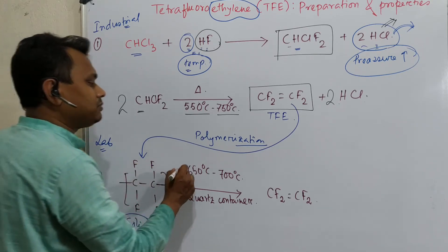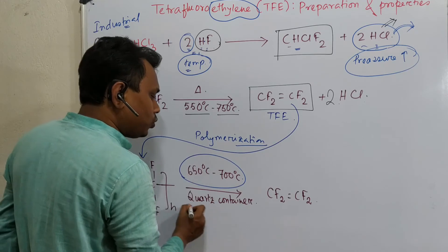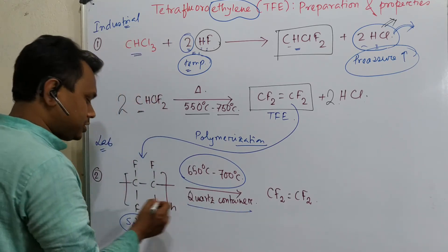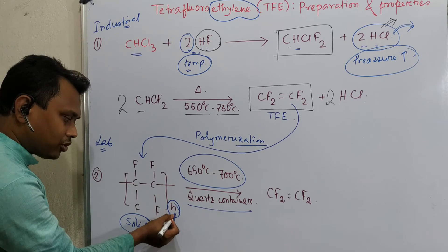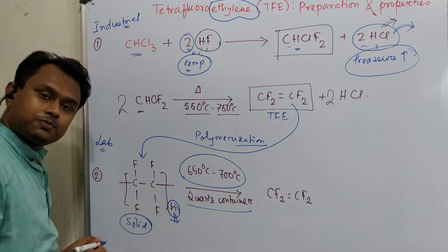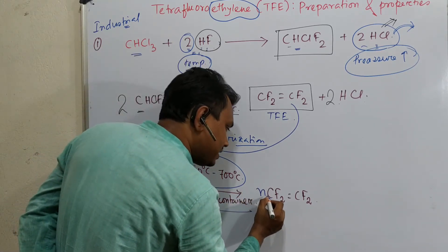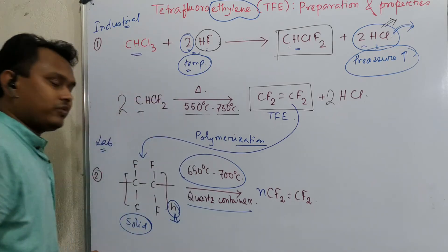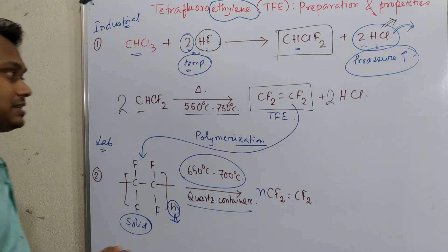They heat this polymer further in a quartz container. So what happens? It produces from n—this is actually the number of monomeric units to produce this polymer—it produces this n number of monomers. Now question, why has this happened? See, we know that ΔG equals ΔH minus TΔS.